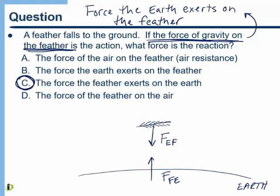Many of you probably got this one wrong because it's hard to figure out when you're first learning it. But the key thing is: once you identify the two objects — earth and feather — to find the reaction force, just switch them in the sentence. Earth exerts a force on feather; feather exerts a force on earth. Notice they don't act on the same object. That's the key thing about an action-reaction pair: each force acts on a different object.